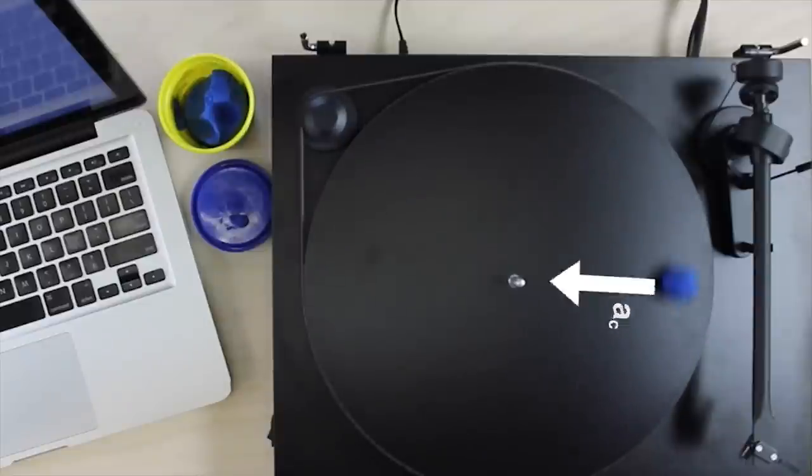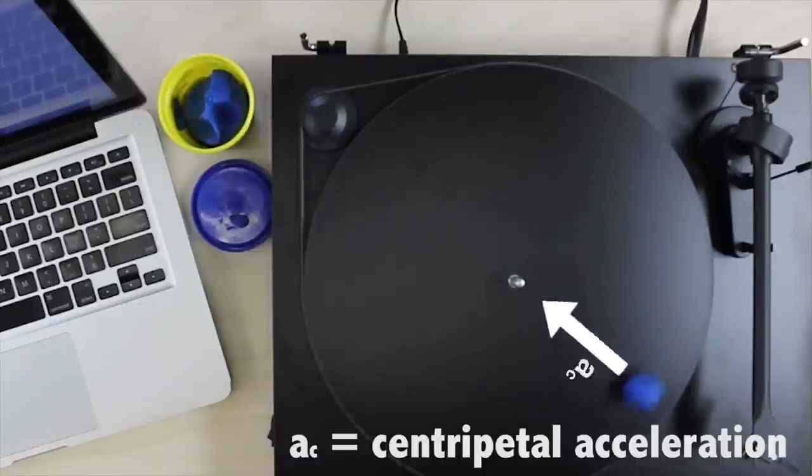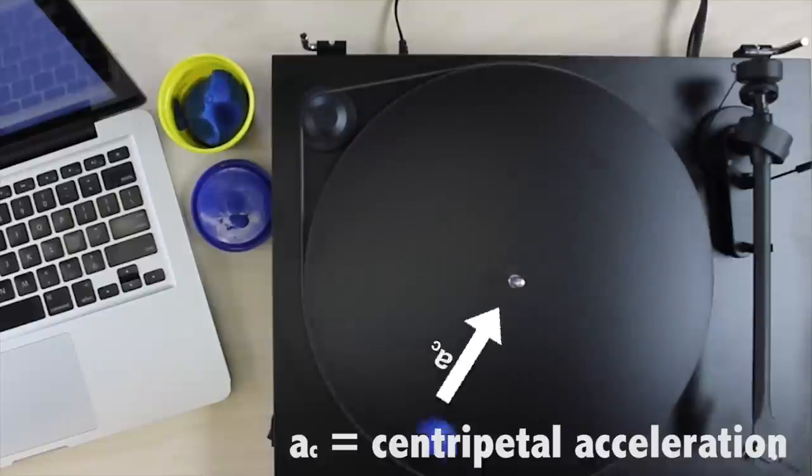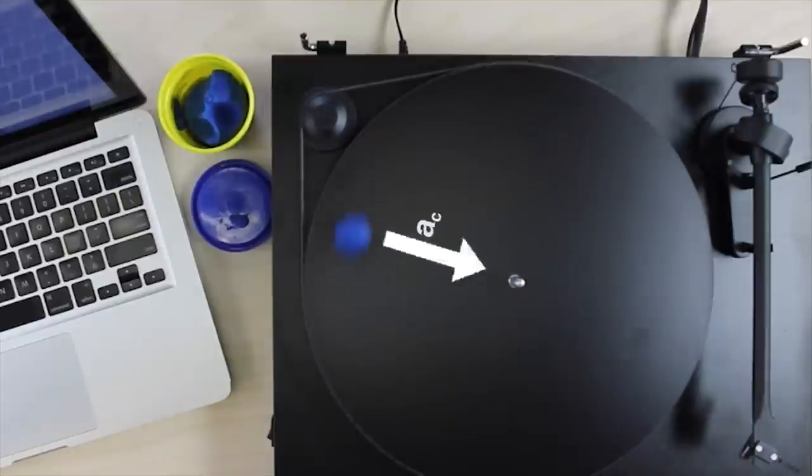We give this acceleration a special name, centripetal. Now that we know something about the position and acceleration of objects moving in circular paths, let's compare this motion to the motion of our spring.